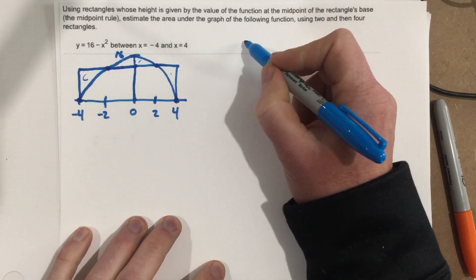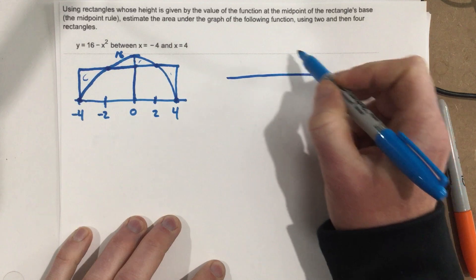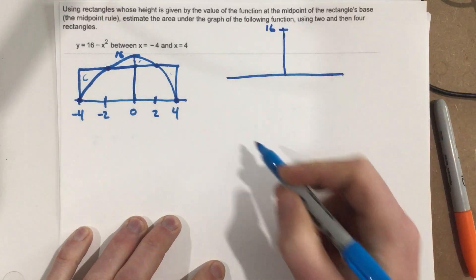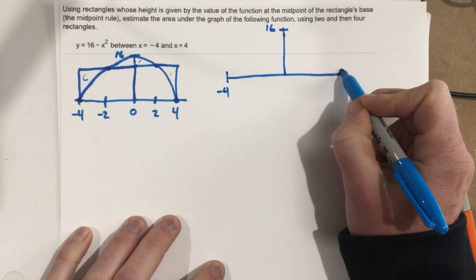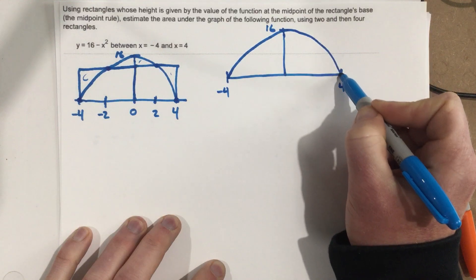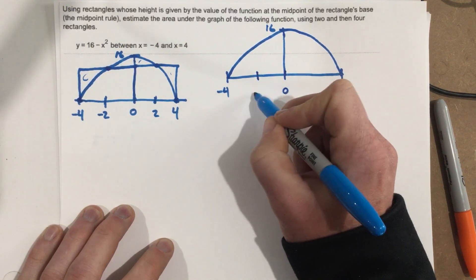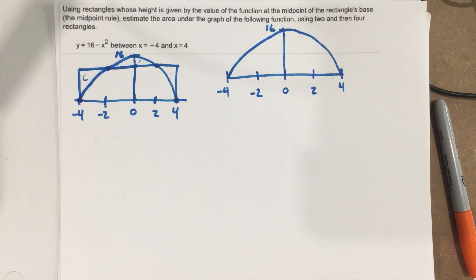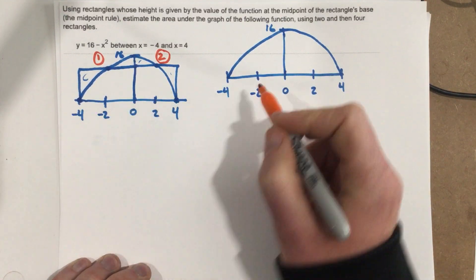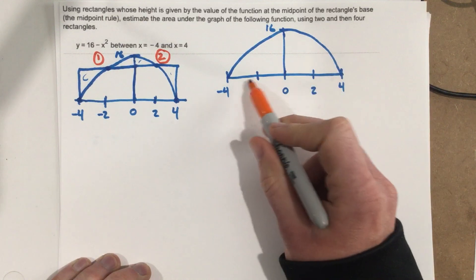Now let's draw the graph for the four rectangles. We get the same exact parabola, marked at 16, negative four, and four. We split the interval at zero, and then split those halves at negative two and two. In the first part of the problem the rectangles had widths of four, but now our rectangles are going to be split into widths of two — rectangle one, two, three, and four.